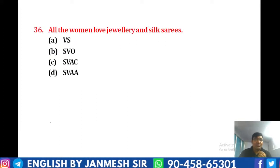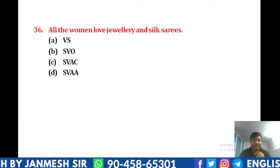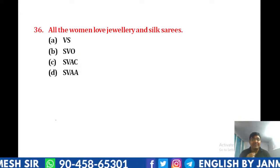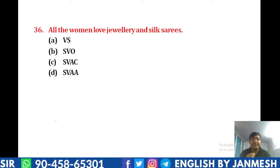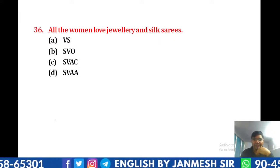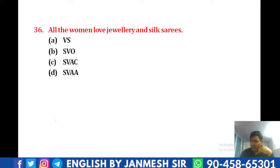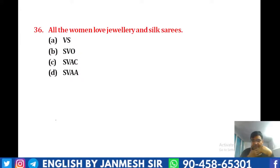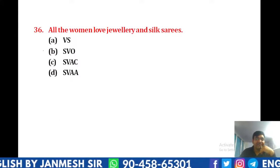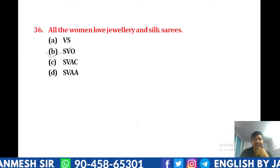आगले question को देखेंगे: 'All the women love jewelry and silk saris.' तो बताओ — 'all the women' subject बनेगा, 'love' verb बनेगी, 'jewelry and silk saris' object बनेगा। बाकी कुछ है ही नहीं। तो answer हमारे यहाँ पर B बन जाएगा — Subject plus Verb plus Object.